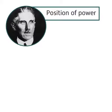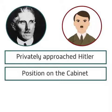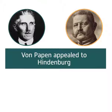During Schleicher's chancellorship, von Papen still hoped for a position of power. He privately approached Hitler, guaranteeing him support in becoming Chancellor, in exchange for a position on the Cabinet. Von Papen believed that Hitler could be easily influenced and would be easily controlled. Hitler agreed to his terms, and on the 22nd of January, von Papen appealed to Hindenburg to appoint Hitler as Chancellor.